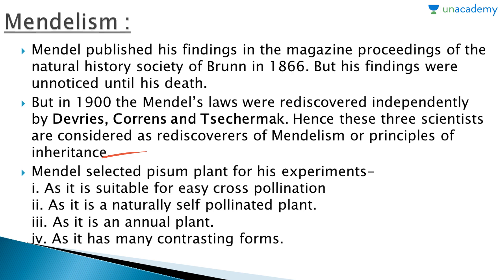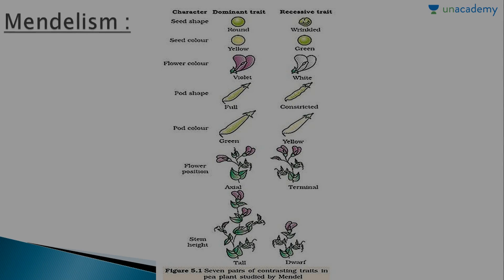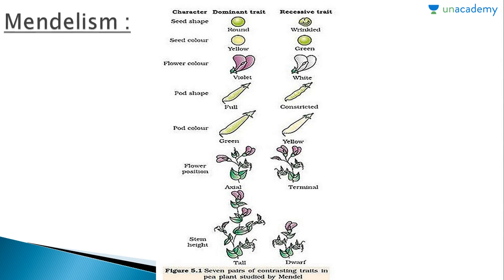Mendel selected the pea plant — Pisum sativum — for his experiments because they were suitable for easy cross-pollination. They are naturally self-pollinated plants, are annual plants, and have many contrasting forms or characters. Mendel chose seven characters to study the principles of inheritance and variations.